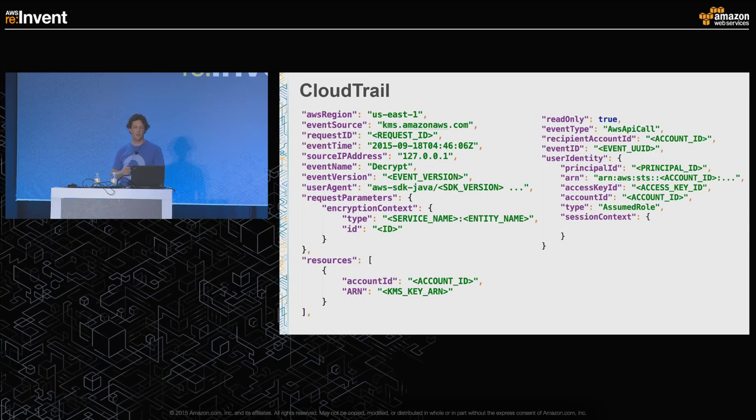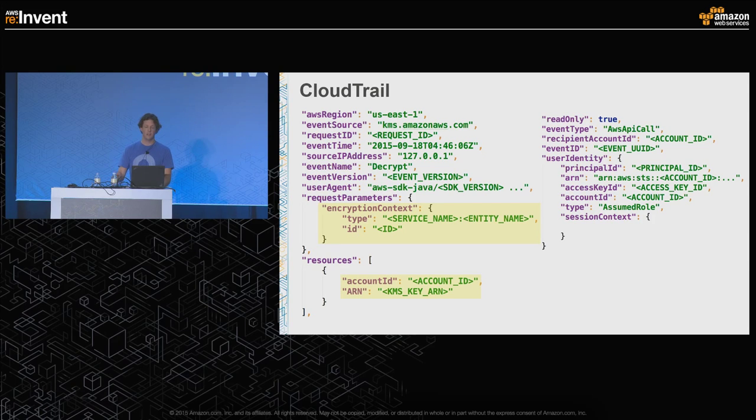This illustrates an example where our directory app role is assigned to some directory app servers, and what this policy is saying is: only allow the decrypt operation if the encryption context provided has a key of 'type' and a value of 'directory service sensitive object.' Now let's take a look at the CloudTrail logs — this is where your encryption context and key information will show up in CloudTrail.